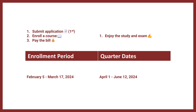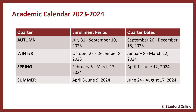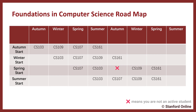Once enrolled in a graduate certificate, you don't need to apply again — you just enroll in courses going forward. After the enrollment period, once accepted into the program, you can enjoy study and exams during the quarter dates. For example, for a class running April 1st to June 12th, you enroll and pay during the enrollment window. Stanford has four quarters: autumn, winter, spring, and summer.